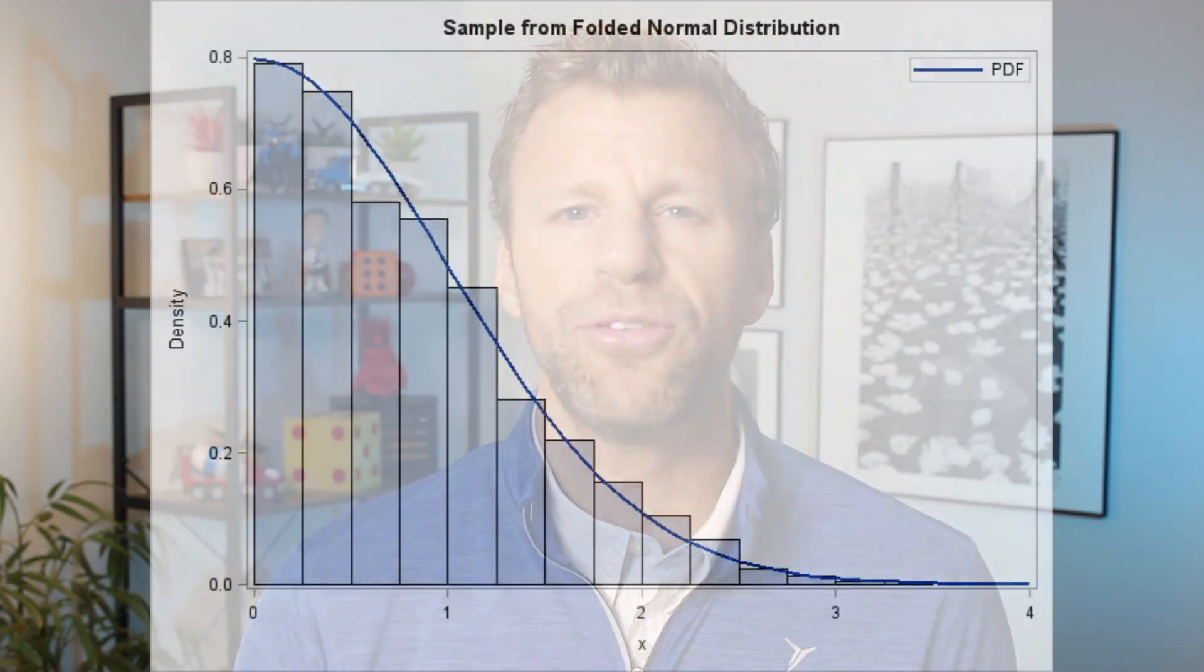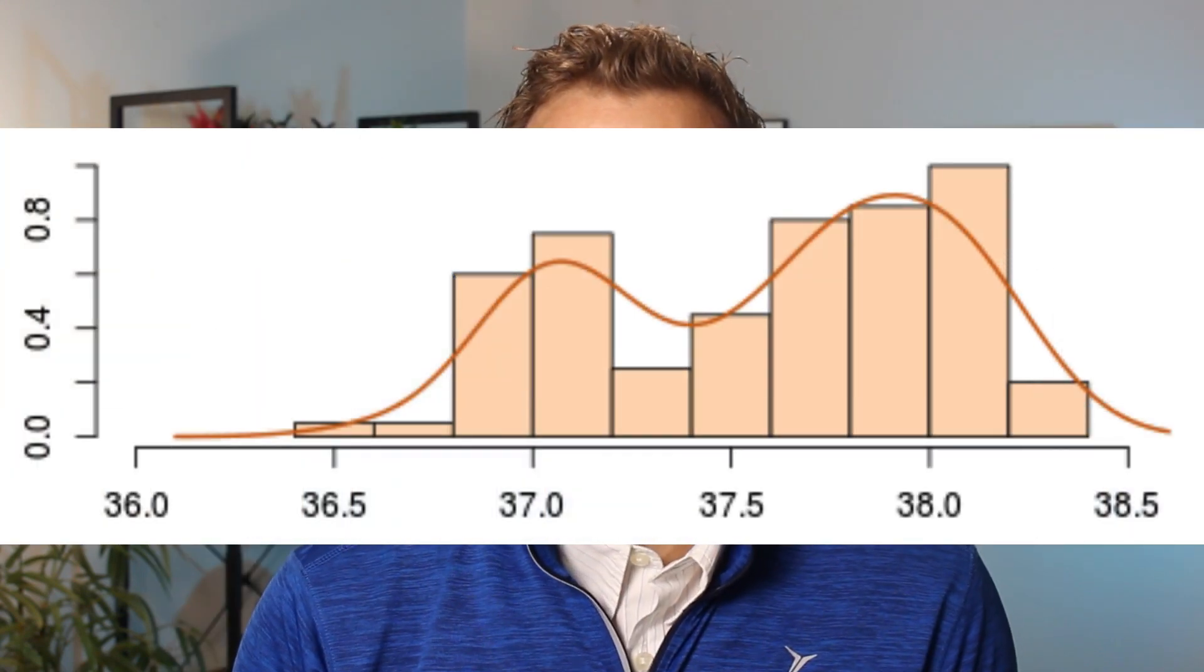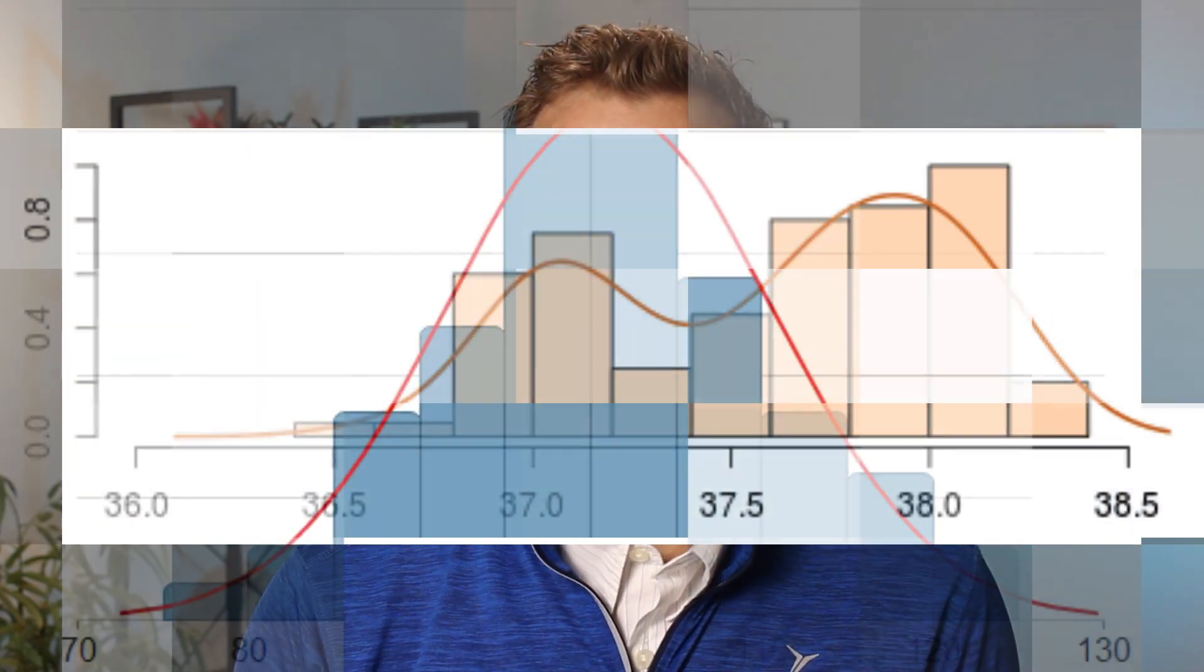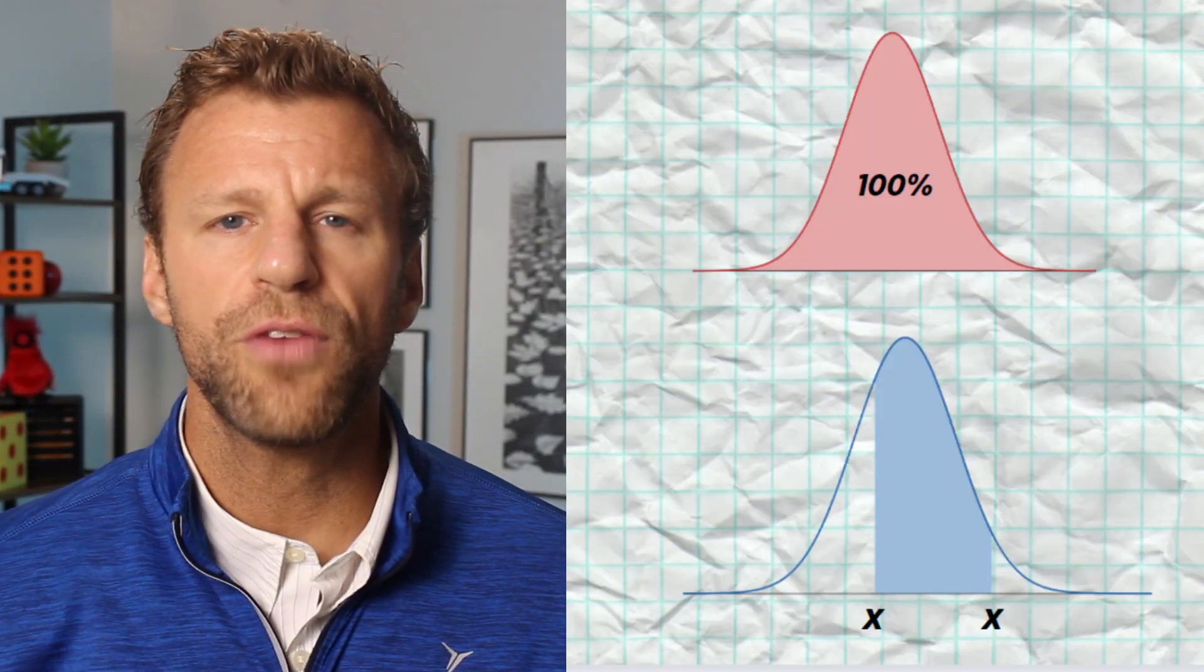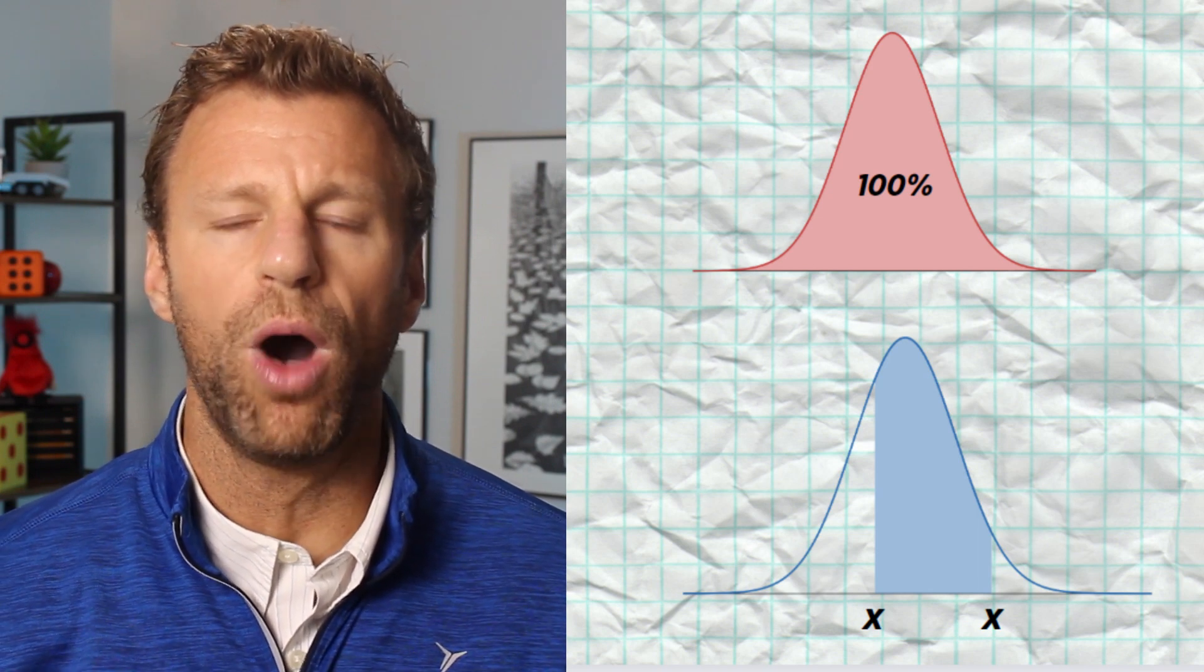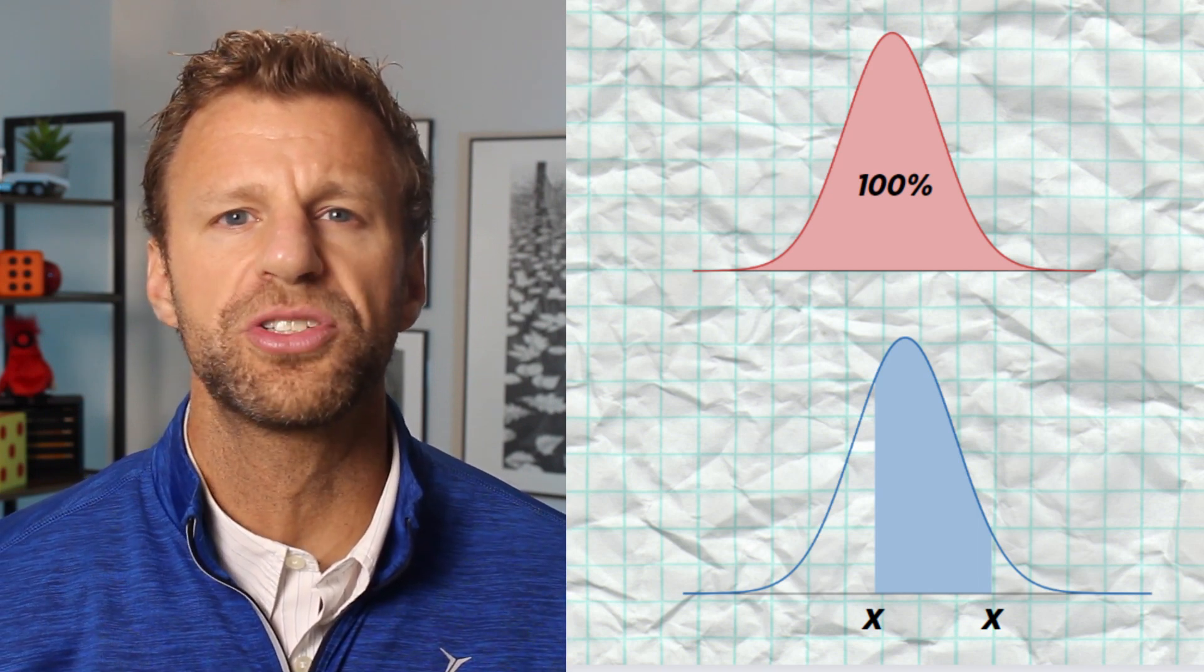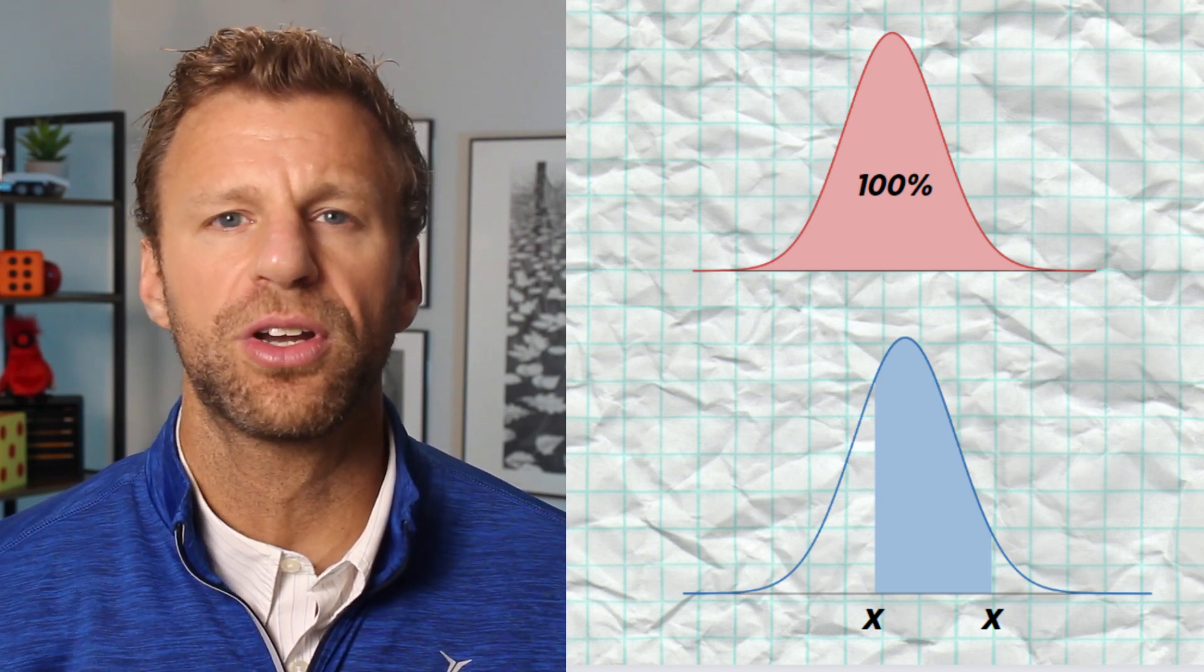But if we want to try to infer what might be true for the larger population that sample came from, we could do so with what's called a density curve. A density curve is used to model what the population might look like. A density curve is always above the horizontal axis, and it has an area of exactly one underneath it, or 100%, representing that 100% of observations fall beneath the curve.